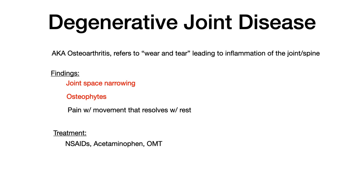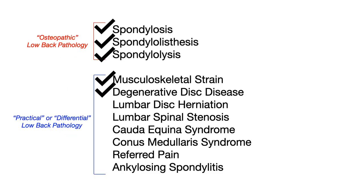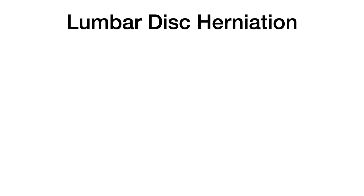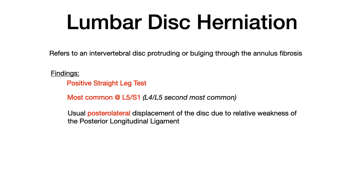Degenerative joint disease is a general umbrella term referring to things like osteoarthritis and spondylosis — joints specific to the spine that degenerate. Findings are exactly what we talked about in spondylosis: joint space narrowing, osteophytes, pain with motion that resolves with rest. Risk factors include obesity and excessive force on the spine such as manual labor. Treatment is conservative: NSAIDs, acetaminophen, and OMT. Spondylosis, osteoarthritis, and degenerative joint disease are essentially interchangeable terms for the purposes of low back pain.